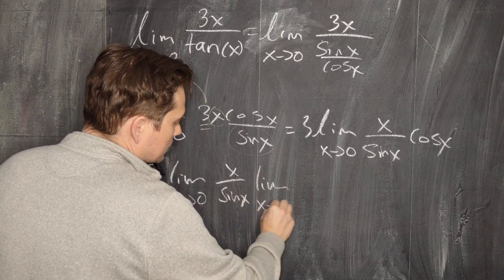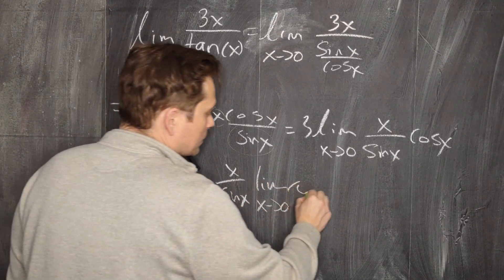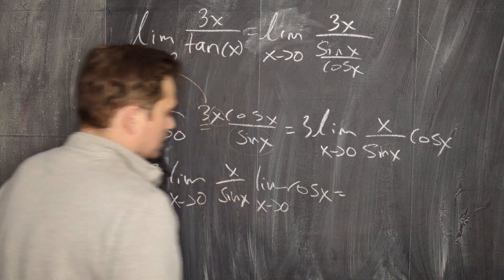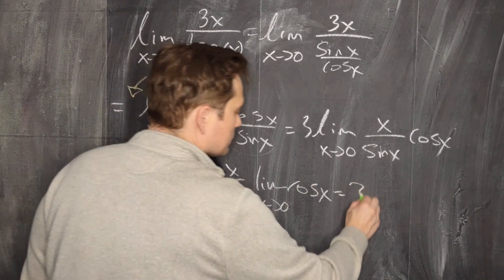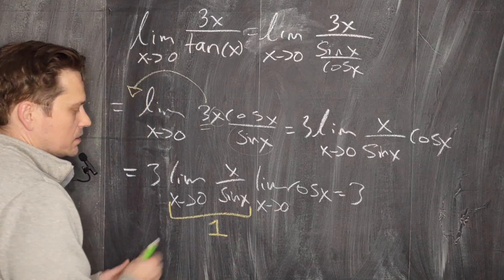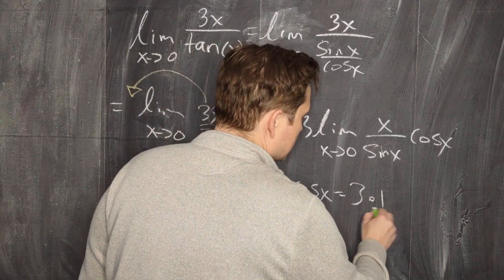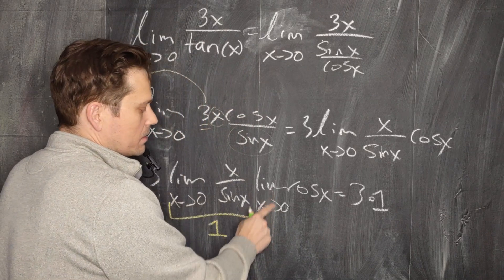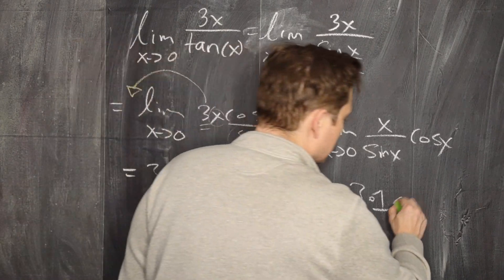Now this is just 3. This limit right here, this is known to have a value of 1. You can check in books if you like. There's going to be times 1, and then this one can be done through direct substitution, so it's just going to be basically cosine of 0.